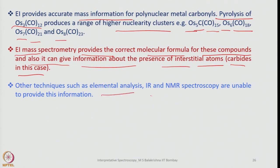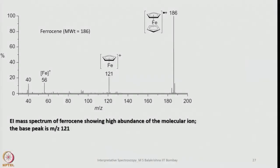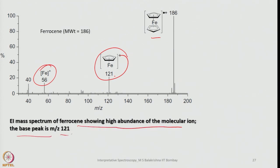Other techniques such as elemental analysis, IR, and NMR spectroscopy are unable to provide information about interstitial carbide atoms formed when carbon monoxide degrades within a cluster. X-ray crystallography aside, IR and NMR cannot tell this vital information. From that point of view, mass spectrometry is very important for organometallic compounds. For ferrocene, the ferrocenium cation radical is observed, then loss of one C5H5 gives a fragment, and eventually the other Cp group is also lost to give Fe2+. The base peak is at 121, corresponding to CpFe+.